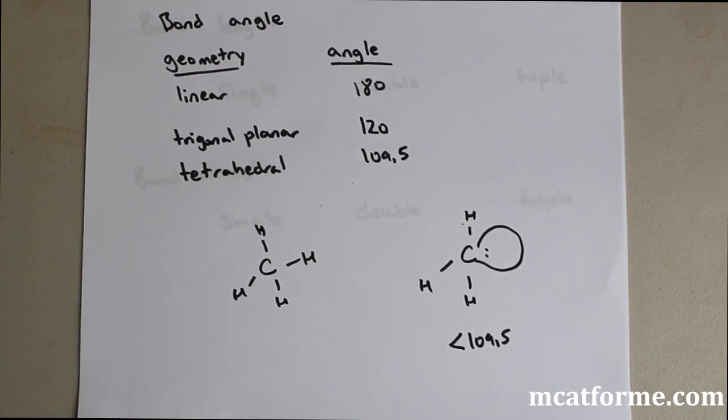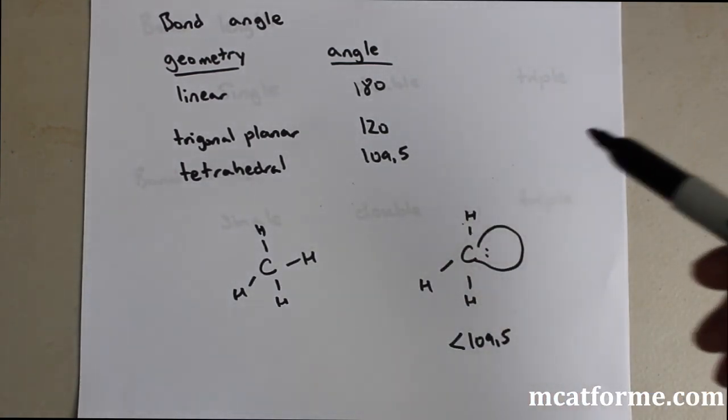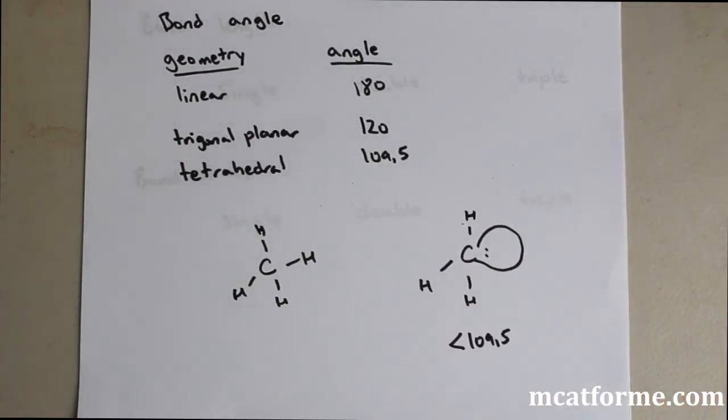So on a test, what they'll do on the MCAT, they'll give you choices that are like 109.5, 110, 112, or 108. So they'll only give you one that's lower, and you just have to know that it's lower. I know it's less than, I don't know how much because it's dependent on the actual molecule, but it's less, and that's all that's important.